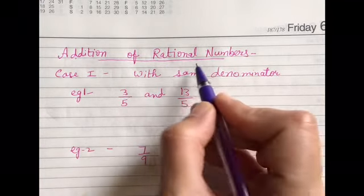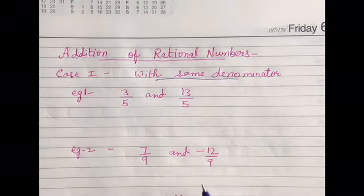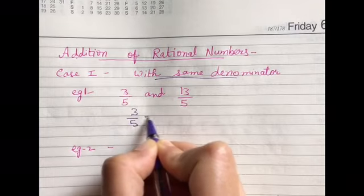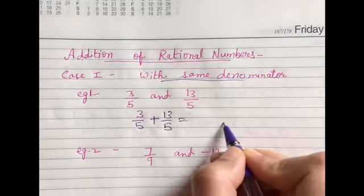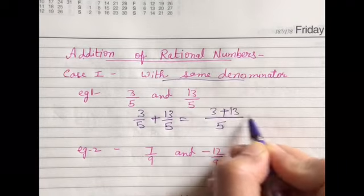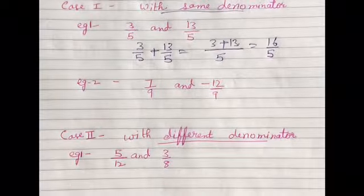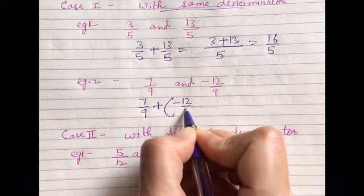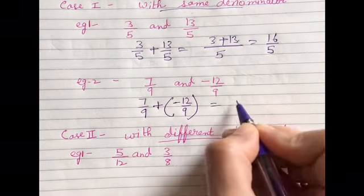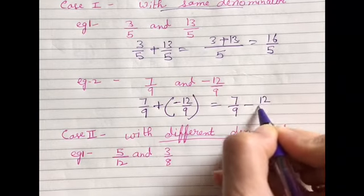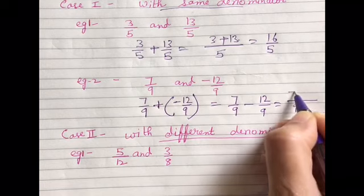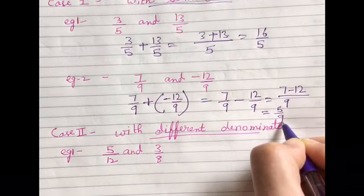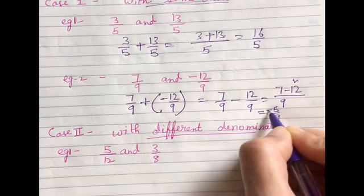For addition, there are 2 cases: with same denominator and with different denominator. In the same denominator case, like 3 by 5 plus 13 by 5, the LCM is 5 itself, so it will be 3 plus 13 by 5, which is 16 by 5. Another example: 7 by 9 plus minus 12 by 9. Plus and minus gives minus, so it will be 7 minus 12 by 9, which is minus 5 by 9.